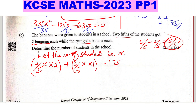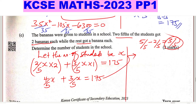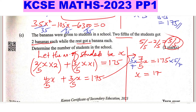Working out: (4/5)X plus (3/5)X equals 175, which simplifies to (7/5)X equals 175. Multiplying both sides by 5/7 gives X equals 175 times 5/7, which equals 125. Therefore, the number of students in the school is 125.